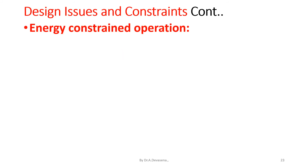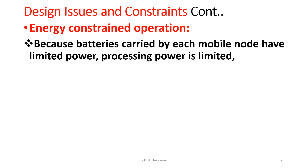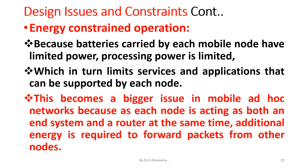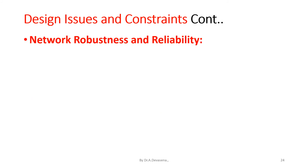The next constraint is energy-constrained operation. Because batteries carried by each mobile node have limited power, processing power is limited, which in turn limits services and applications that can be supported. This becomes a bigger issue in Mobile Ad Hoc Networks because each node acts as both an end system and a router simultaneously, requiring additional energy to forward packets from other nodes.